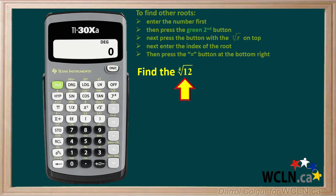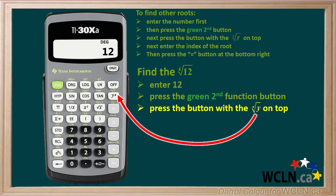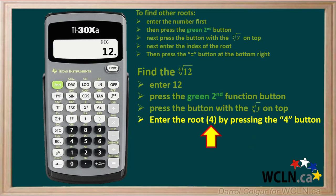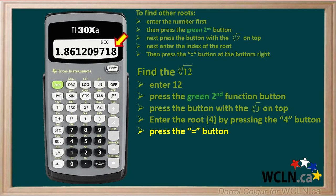Let's say you want to find the 4th root of 12. Start by entering 12 using the number pad, and the number 12 will appear in the display. Next, press the green second function button. Then press the button with the xth root of y on top — this is the y to the power x button. A decimal point will appear after the 12 in the display. You want the 4th root of 12, so now enter 4 by pressing the 4 button. Press the equals button on the bottom right, and an approximate value for the 4th root of 12 to 9 decimal places will now appear in the display.